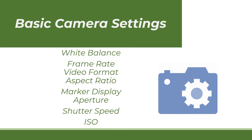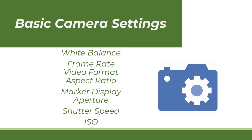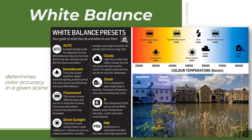Before we shoot, let's be acquainted with our camera and the most basic settings we are going to use while recording. These are the white balance, frame rate, video format, aspect ratio, marker display, aperture, shutter speed, and ISO. First in our camera setting is the white balance. White balance determines color accuracy in a given scene. You can select from the preset your desired color for the scenes that you are recording — some of these presets are incandescent, fluorescent, direct sunlight, cloudy, and shade — or you can calibrate your color if your camera has a color temperature setting.